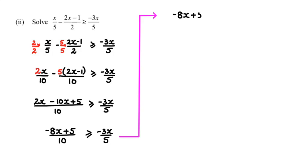Now we need to rearrange so that we have x by itself. I'm going to cross multiply, so the 5 comes to the numerator on the left-hand side: 5(-8x+5) is greater than or equal to -3x times 10, since the 10 cross multiplies to the right-hand side.